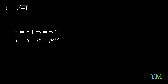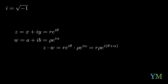Now this lets us do something we've never done before: actually multiplying complex numbers. Z times w would be r times e to the i theta, times rho times e to the i alpha. Using basic multiplication rules, we receive that the product is r times rho times e to the i, the sum of theta and alpha. What about z to the power of n? Just by using basic rules, we receive r to the n, e to the power of i n theta.